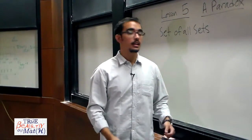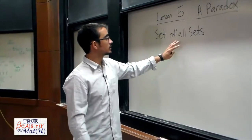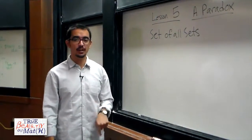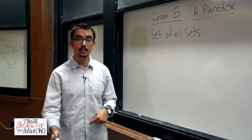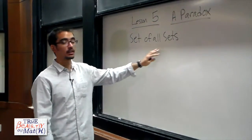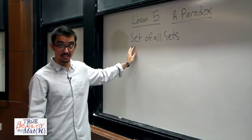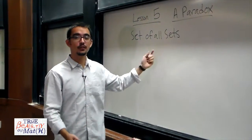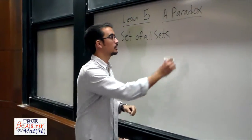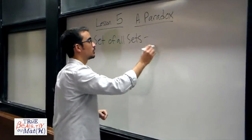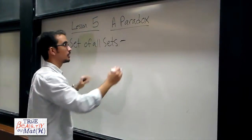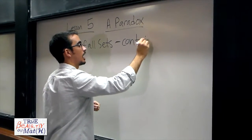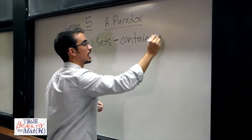What we find is that the set of all sets must therefore contain itself as an element. After all, the set of all sets is a set — but it's the set of all sets. Therefore, it actually contains itself as an element. We notice that the set of all sets is a set which contains itself as an element.